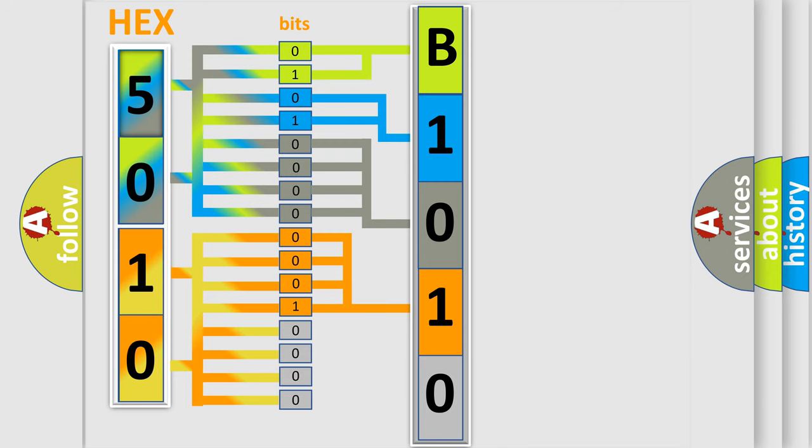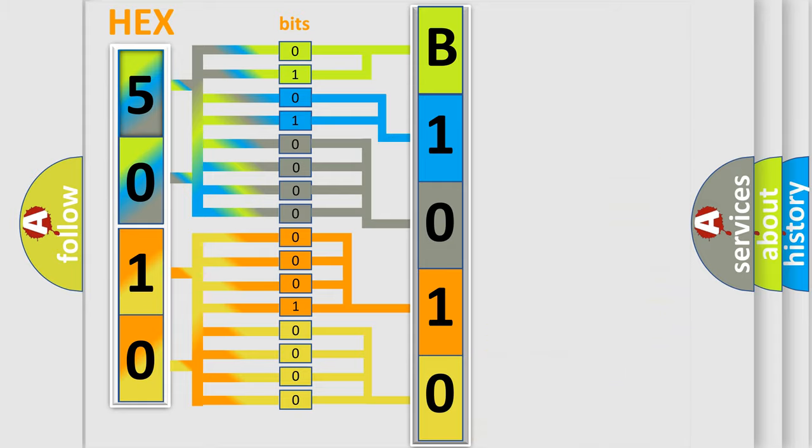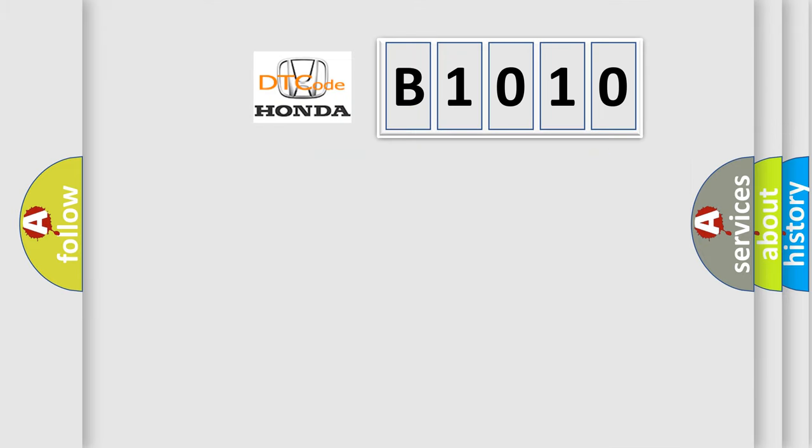A single byte conceals 256 possible combinations. We now know in what way the diagnostic tool translates the received information into a more comprehensible format. The number itself does not make sense to us if we cannot assign information about what it actually expresses. So, what does the diagnostic trouble code B1010 interpret specifically?